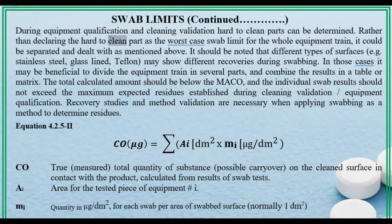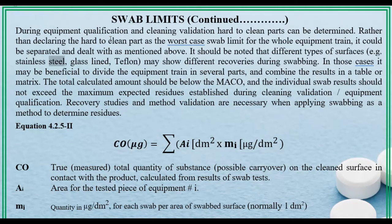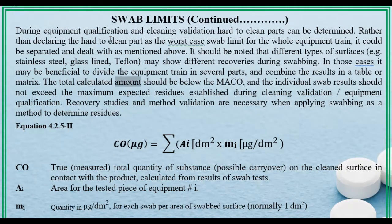Swab limits continued: during equipment qualification and cleaning validation, hard-to-clean parts can be determined. Rather than declaring the hard-to-clean part as the worst case swab limit for the whole equipment train, it could be separated and dealt with as mentioned above. It should be noted that different types of surfaces — for example, stainless steel, glass-lined, PTFE/Teflon — may show different recoveries during swabbing. In those cases, it may be beneficial to divide the equipment train into several parts and combine the results in a table or matrix.